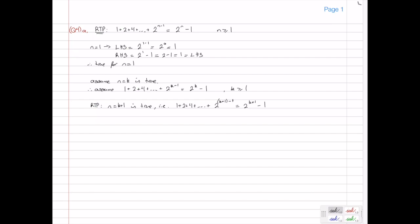All right, let's just start with the left-hand side. The left-hand side of what I'm trying to prove is 1 plus 2 plus 4 plus dot dot dot plus the next term would be, or the last term would be 2 to the k plus 1 minus 1.